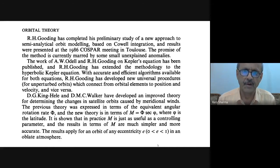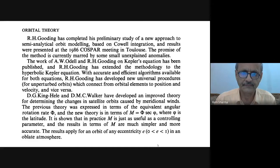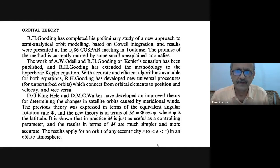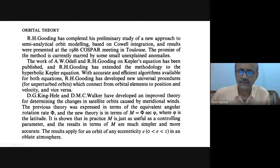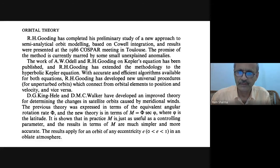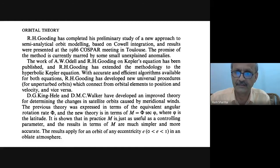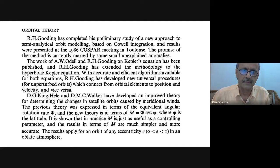The work of A.W. Odell and R.H. Gooding on Kepler's equation — where almost all great mathematicians have put their minds — is important. Kepler's equation is M = E − e·sin(E), where M is the mean anomaly, E is the eccentric anomaly, and e is the eccentricity. The paper on Kepler's equation has been published, and R.H. Gooding extended the methodology to the hyperbolic Kepler's equation also, with accurate and efficient algorithms available for both, published in Celestial Mechanics Journal.